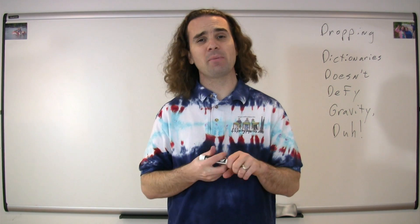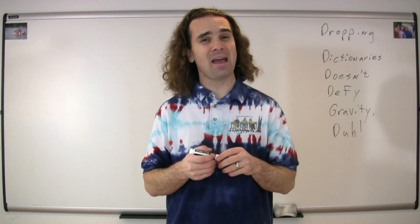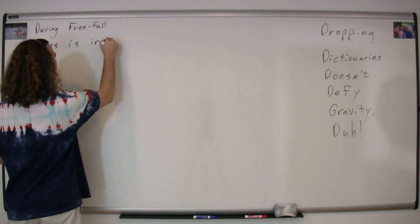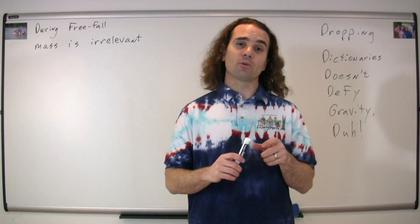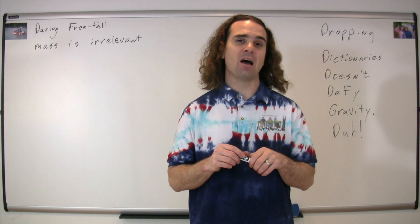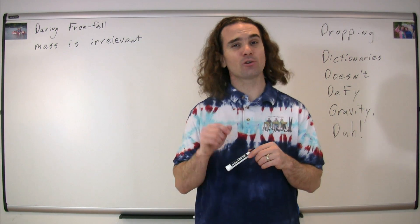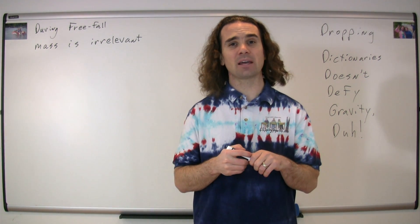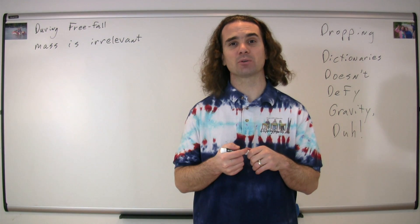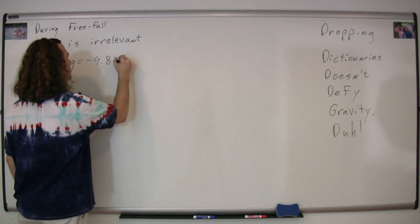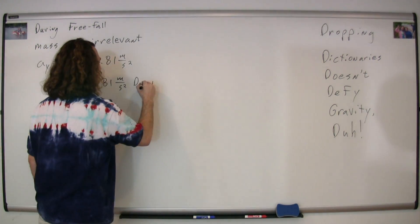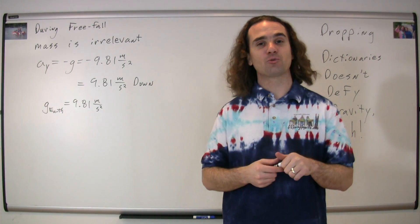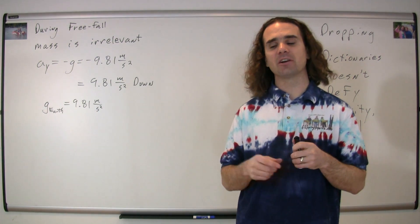One of the things that we talked about quite a bit already is that the mass is irrelevant when it comes to freefall. In other words, no matter what the mass of the object, on Earth, in the vacuum that you can breathe, it will accelerate downward at a rate of 9.81 meters per second squared. We are going to prove it today by dropping different combinations of dictionaries.